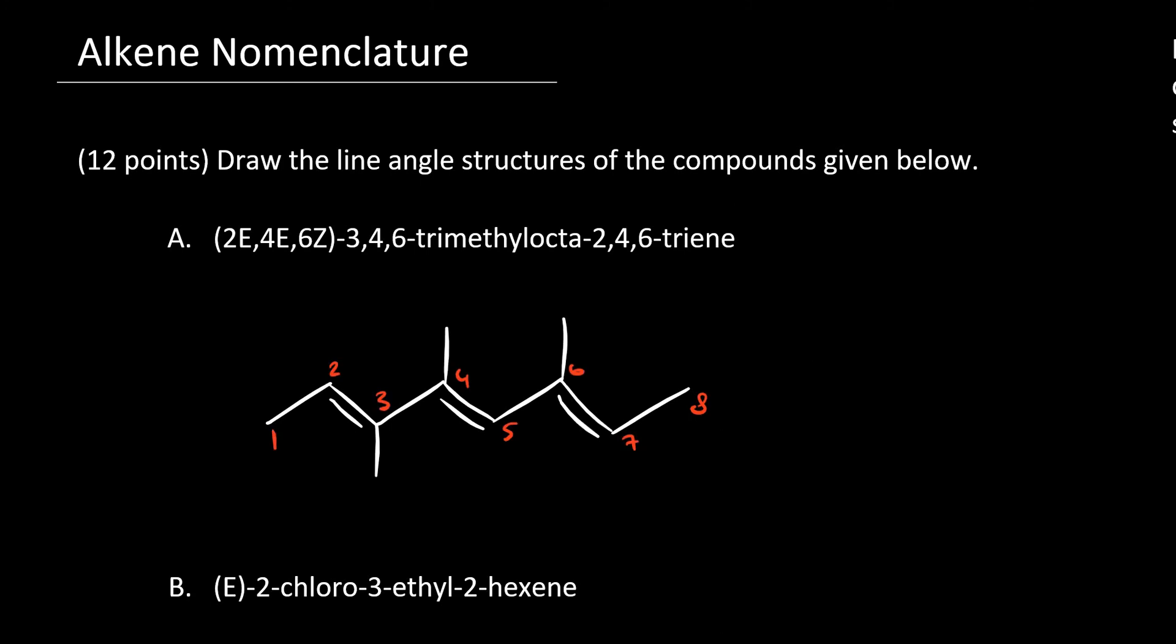And now the final step is just to confirm if we have the correct stereochemistry. So between carbons 2 and 3, we have this double bond, and we must ensure that it's 2E. So if we draw on our lowest priority groups, we can use CIP rules just like we did with R and S. So at carbon 2, I have a methyl and a hydrogen, so of course methyl takes priority.